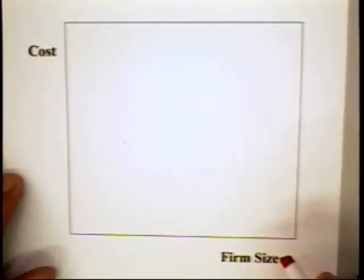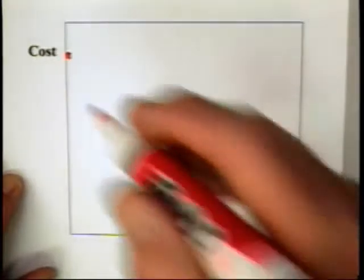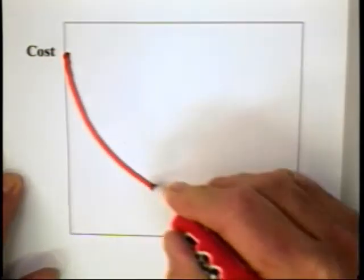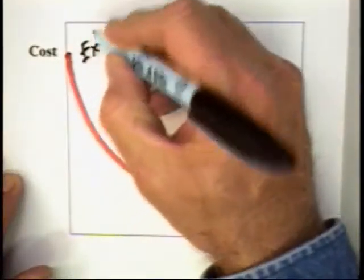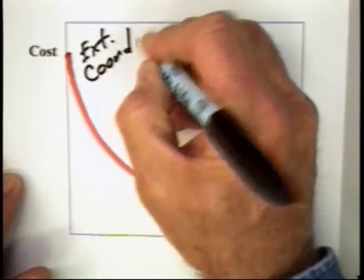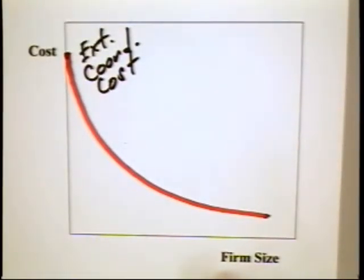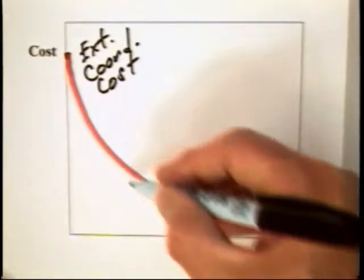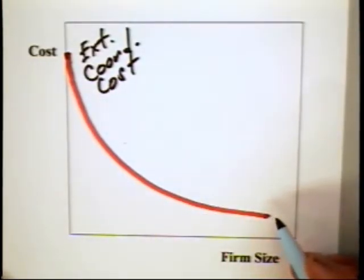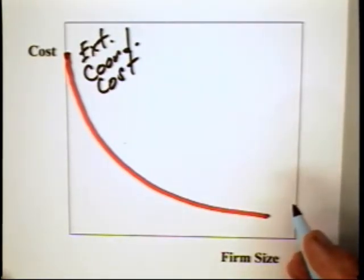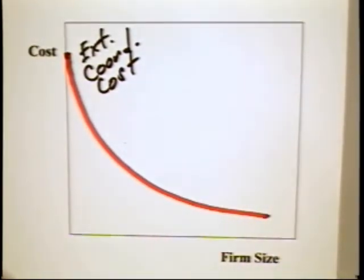We know that the external coordinating costs — that is, the cost of engaging in market transactions — is likely to be very high when the firm is small. But as the size of the firm expands, those external coordinating costs will likely contract. The reason external coordinating costs are high when the firm is very small is that the firm will be relying on external sources of supply for everything, which means it will experience high transaction costs. When the firm expands, it takes on more and more activities inside the firm, it has fewer activities outside, and as a result market transaction costs can go down.